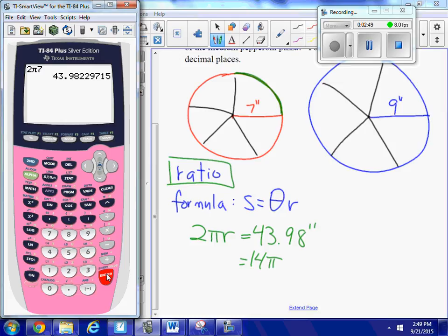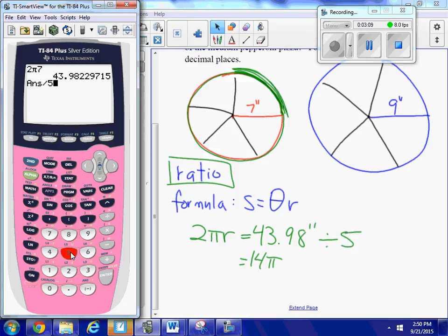So if my entire way around is 43.98, but I only want this piece of it right here, which is one-fifth, how about if I just divide 43.98 by 5? So I get 8.80. That's one way of doing it.